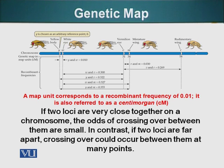In this example, we have Y. You can see the Y is the body color right here. White eye is W. Vermillion eye is V. Miniature wings is M. And rudimentary wings is R.